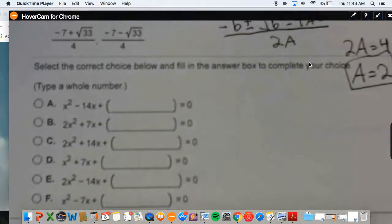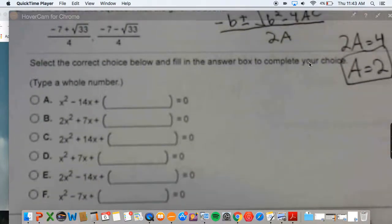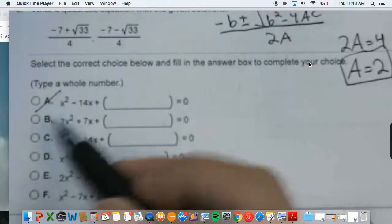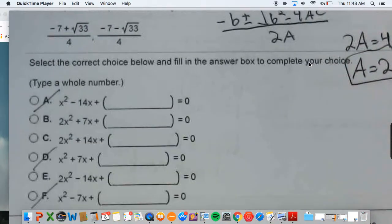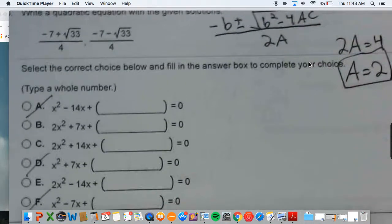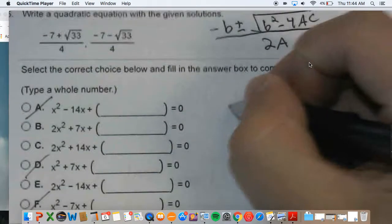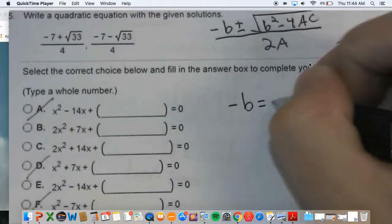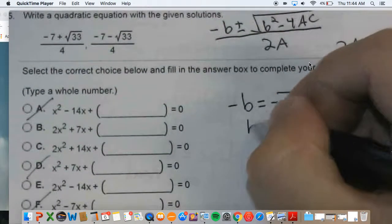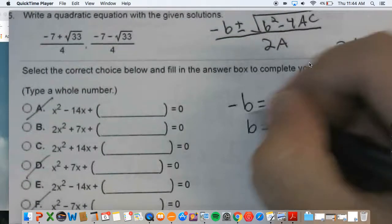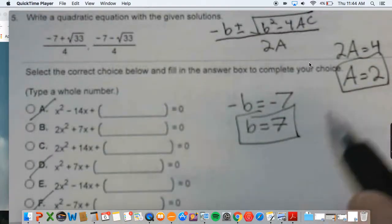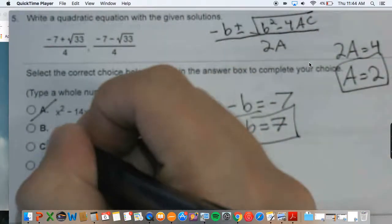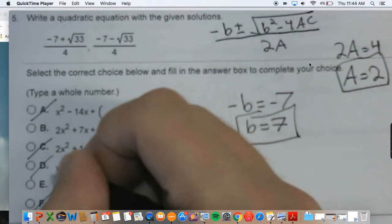So this allows us to eliminate a few answers. We can get rid of a, because your a coefficient is not 2. We can get rid of d. We can get rid of f. With that being said, we can also say that b, negative b, is going to be negative 7. So this implies that b has to be positive 7. So we can eliminate a few more answers. We can eliminate c. We can eliminate e.